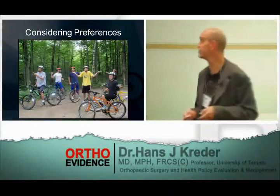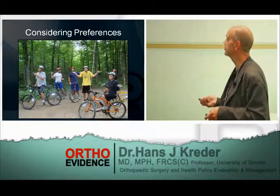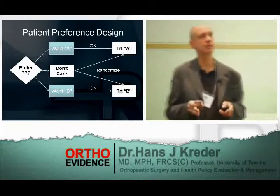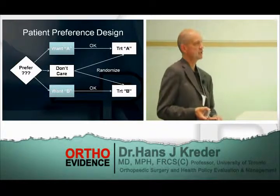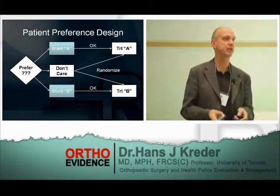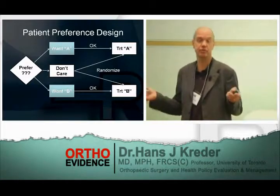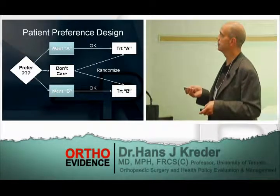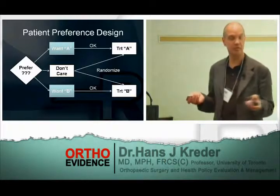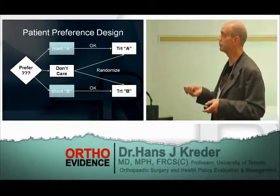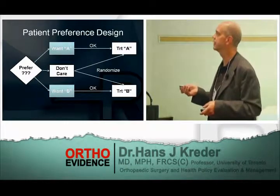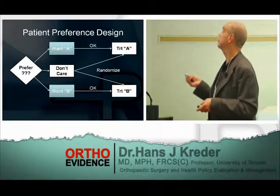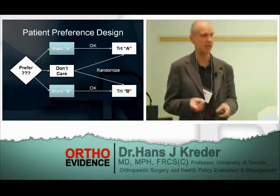Sometimes in a randomized trial, when you approach a patient and present treatment A and treatment B, some say they want treatment A, some want treatment B, and some say they don't really care and will go into the trial. What if we were to ask patients: we randomize those who don't care to treatment A or B, and if you want A you get A, if you want B you get B? Is that a reasonable thing to do?